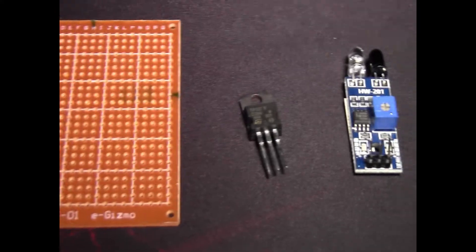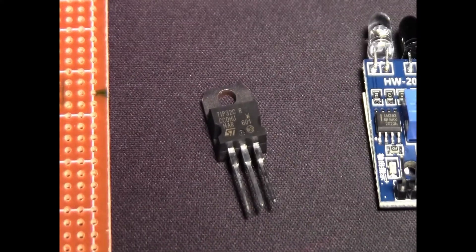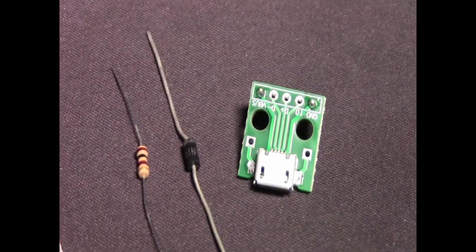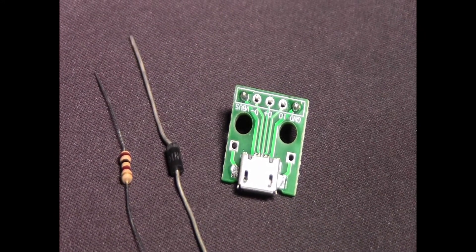Here are the parts we're gonna need: prototyping board, DIP32C transistor, IR proximity sensor module, 100 ohm resistor, rectifier diode, and a micro USB breakout board.